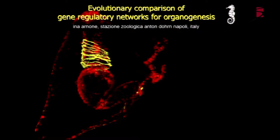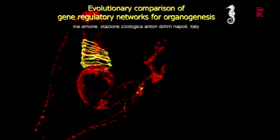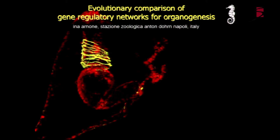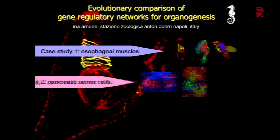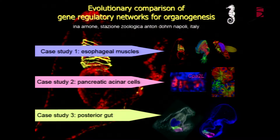In the lab, our aim is to study the evolution of organs and body parts. We take the approach of comparing the gene regulatory networks that control these organs or body parts in different animals. We use the larval embryo as a model system. The organs we are focusing on are the ones related to the feeding of these animals, in particular the esophageal muscles and the pancreatic acinar cells.